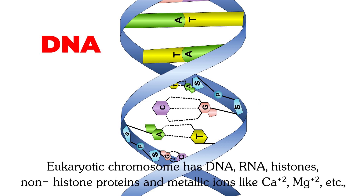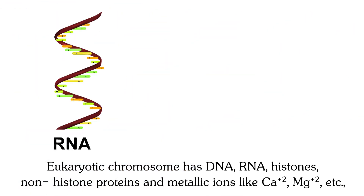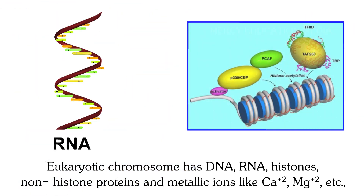Eukaryotic chromosomes contain DNA, RNA, histones, non-histone proteins, and metallic ions like calcium (Ca), magnesium (Mg), etc.